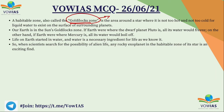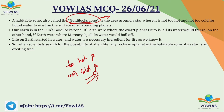The Goldilocks zone is the zone that is neither too hot nor too cold — only in these conditions can life survive. Mercury and Venus are too hot, while Jupiter, Saturn, Uranus, Neptune, and Pluto are very cold. It is only Earth that is neither too cold nor too hot, which is why life exists here. When exploring galaxies for signs of life, scientists first try to identify the Goldilocks zone around a star.